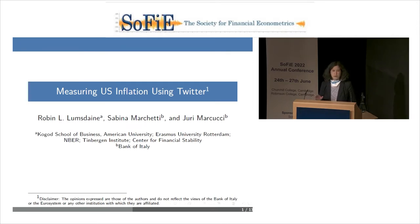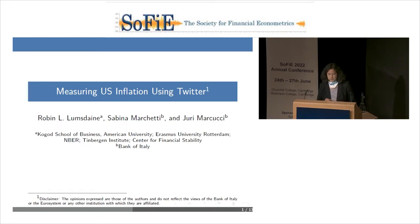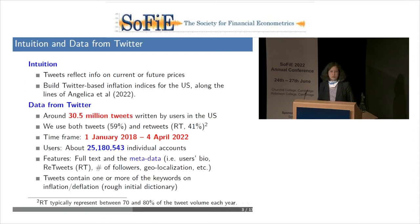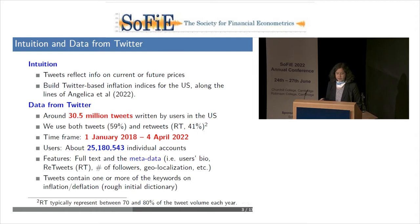The first project, with co-authors Sabina Marchetti and Juri Marcucci, follows the earlier Italian paper by measuring U.S. inflation using Twitter. The intuition is that tweets reflect information on current or future prices or at least perceptions—people tweet about crazy high prices, gas lines, and things like that. We're building Twitter-based inflation indices for the U.S. The data covers around 30.5 million tweets from U.S. users between January 2018 and April 2022, using both tweets and retweets representing around 25 million individual accounts.